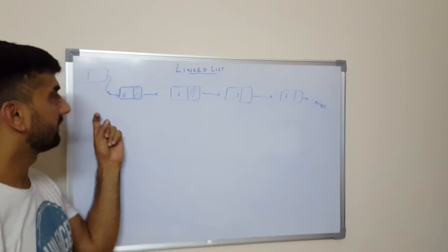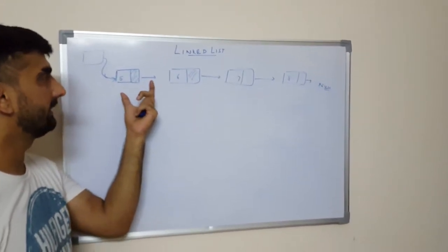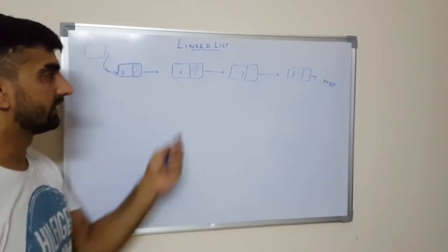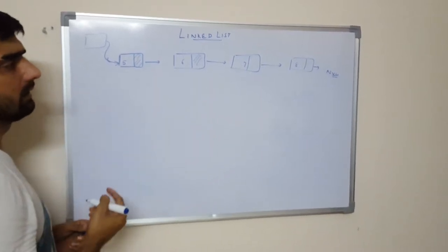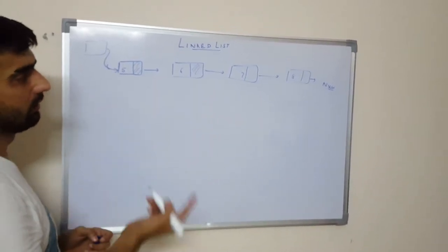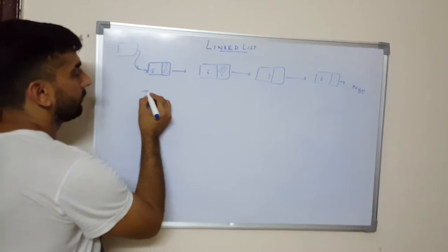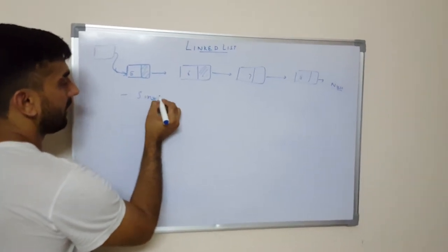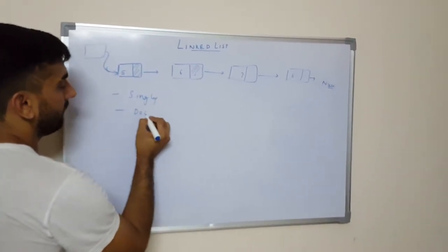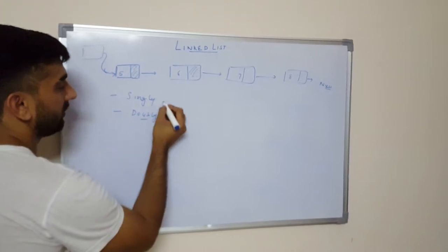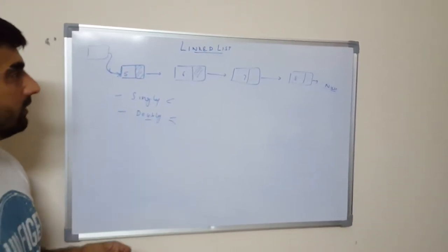Basically, a linked list is a linear data structure which consists of nodes and each node consists of two parts. Linked lists are basically of two types: singly linked list and doubly linked list. We will discuss more about these two types in our next video.